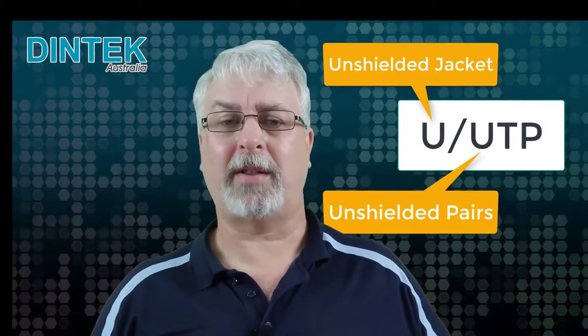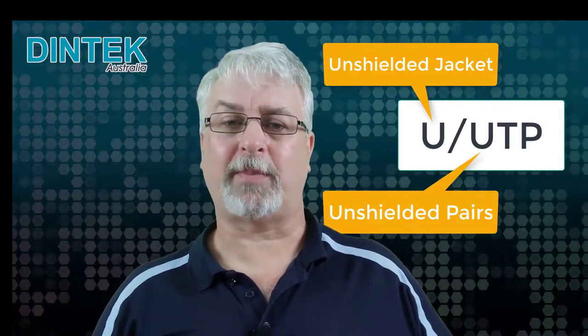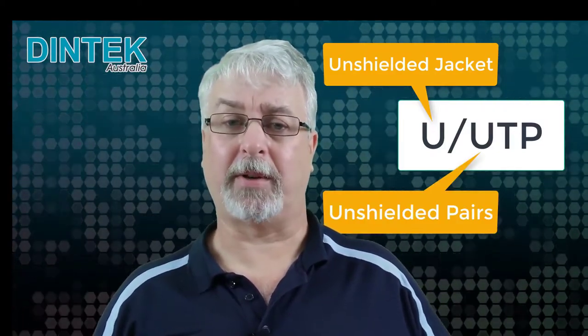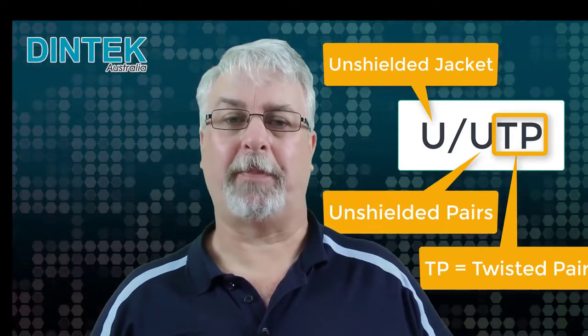The cabling industry uses code letters separated by a slash to identify shielded and unshielded cable types, and shielding can be applied around the outside of the cable, around the individual pairs inside, or both. Unshielded cable that most of us call UTP is actually U/UTP. The U before the slash indicates that the cable jacket is unshielded, and the U after the slash means that the pairs inside are also unshielded. TP just means twisted pair.